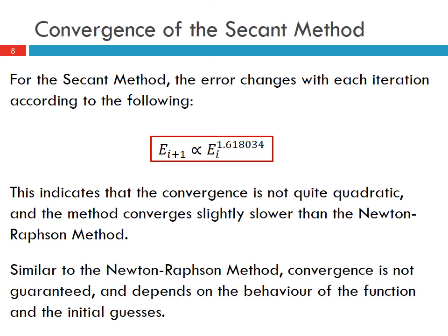Similar to the Newton-Raphson method, convergence is not guaranteed and it depends on the behavior of the function and the initial guesses. The similar kind of pitfalls of the Newton-Raphson method apply to the secant method as well.